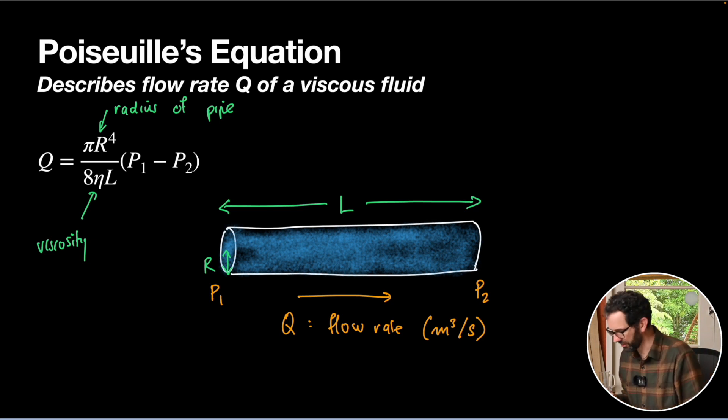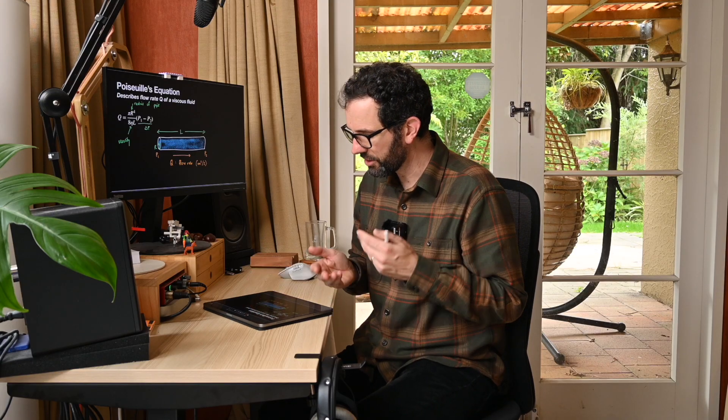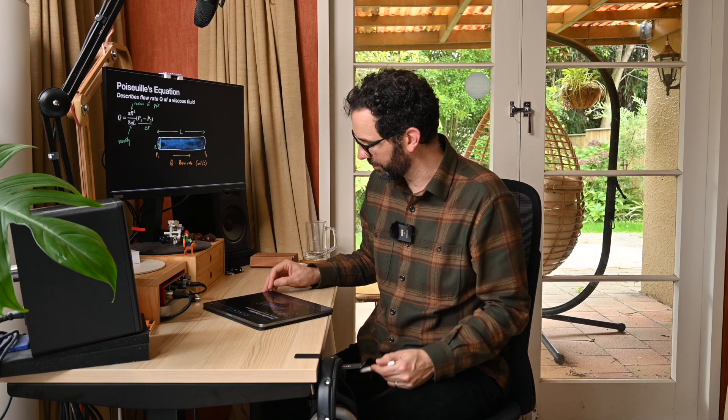So essentially this says, if we take a liquid of viscosity eta and apply a certain pressure, this is sometimes called delta P, a certain pressure difference across the two ends of the pipe, then this tells me how much fluid is going to flow. So if I apply a pressure at one end and the other end is at zero, or whatever, then this equation will tell us how much liquid we're going to have flowing.